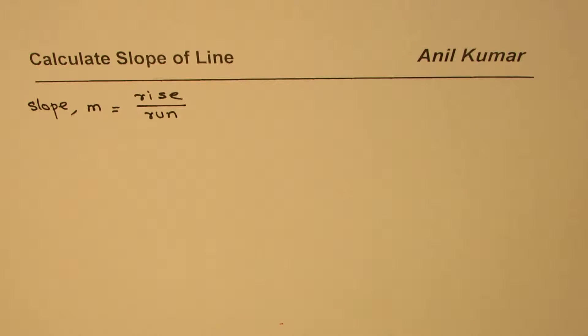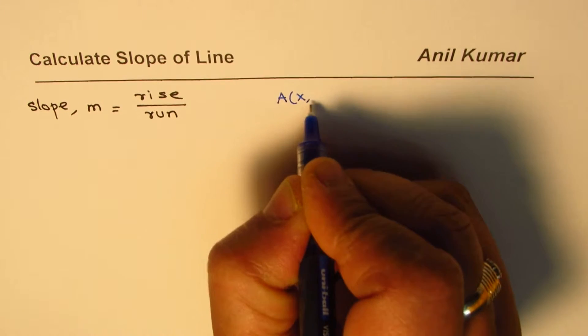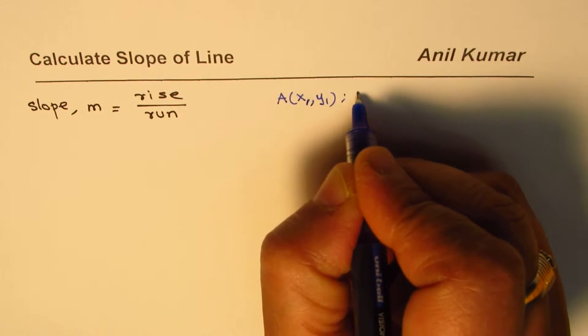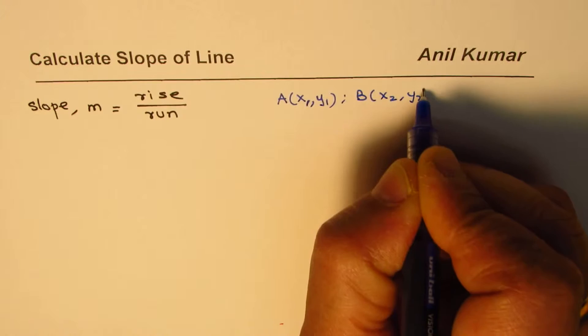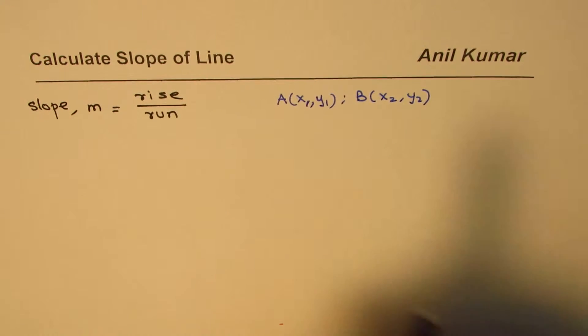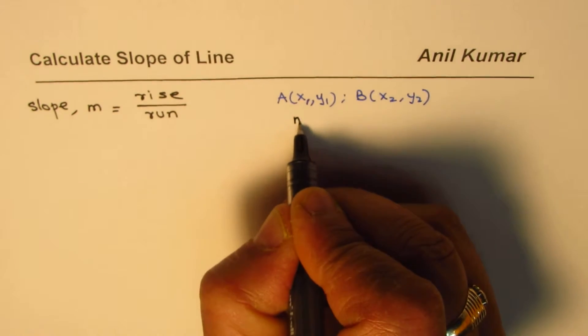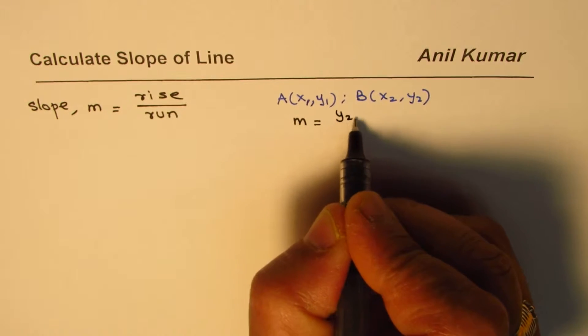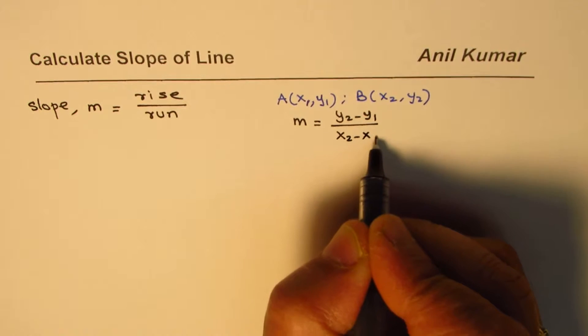At times, if you are given two different points, let's say we have point A whose values are x1, y1, and point B whose values are x2, y2. In that case, we can write slope of the line m as equal to rise, which will be the difference in y values, so y2 minus y1 divided by x2 minus x1.